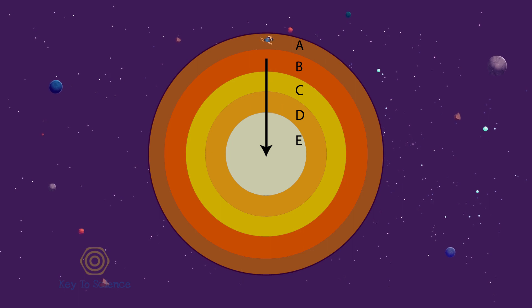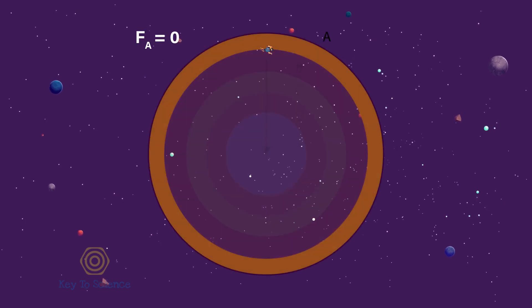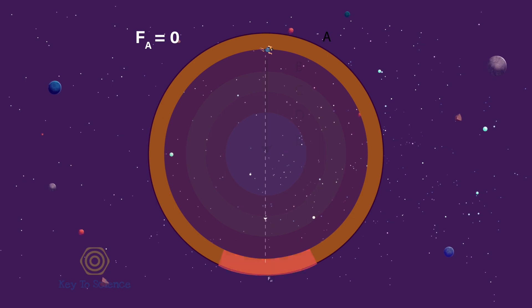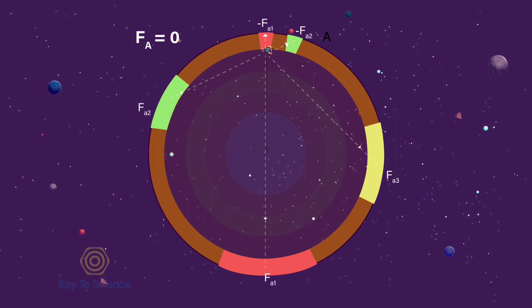Now, when we'll come to the surface of shell B after passing shell A behind, the resultant force on us exerted by shell A will be zero. F-A-1 will be canceled out by minus F-A-1. F-A-2 will be canceled out by minus F-A-2. F-A-3 will be canceled out by minus F-A-3, and so on.